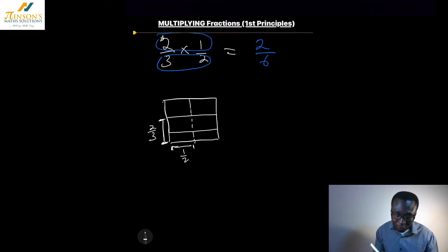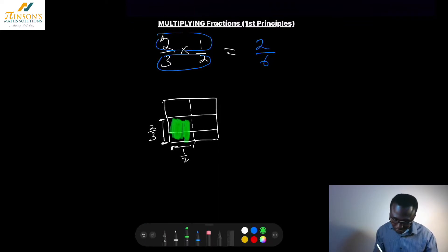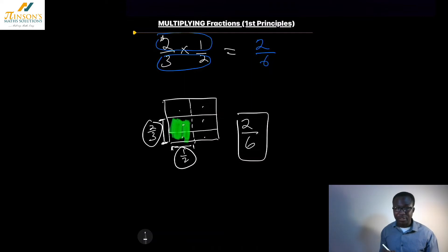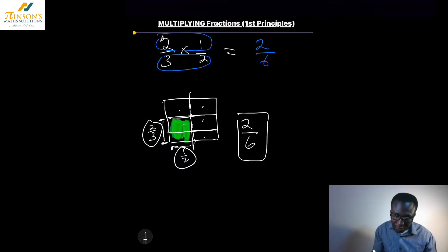What I'm interested in is the overlap — where my two fractions meet. You can see from the diagram that altogether we've got two different shaded areas, which is two areas out of one, two, three, four, five, six different areas. Therefore, two thirds times one half gives us two areas out of six possible areas.